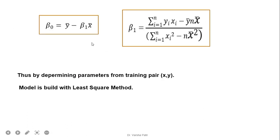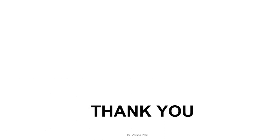When solving problems, you need to remember these formulas. By determining the parameters from the training pair (x, y), the model is built using the least square method. In this video, I have explained the theory of regression and the derivation by the least square method. In the next video, I am going to solve a problem on linear regression with graphical representation so that you can understand what the error is and how it is represented. You only need to remember this formula to solve problems in the exam. Thank you.